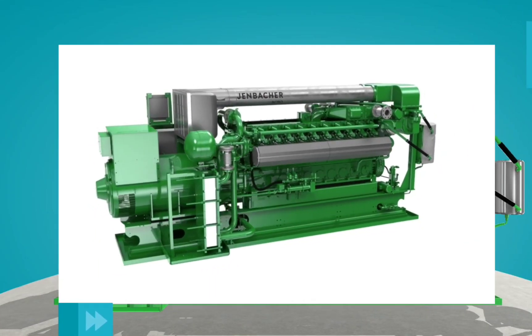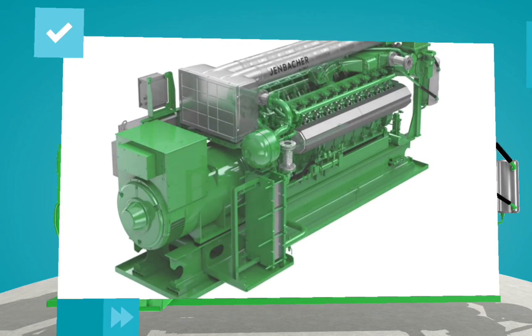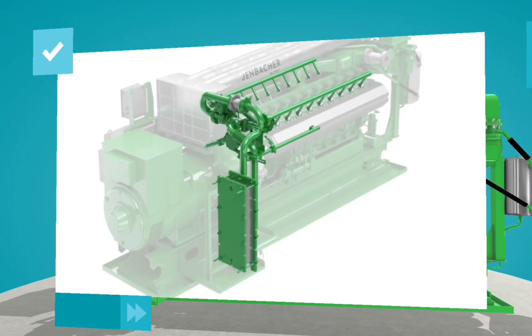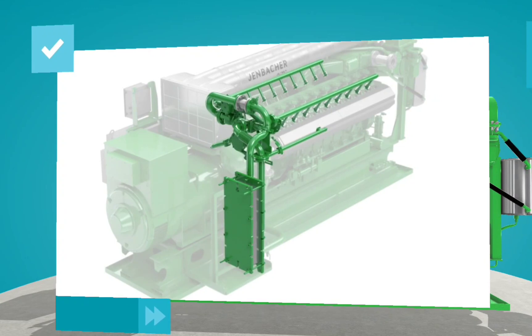When air and gas are combusted, heat is released. The jacket water circuit is one of the ways this heat energy is extracted from the engine, and it also helps keep the engine temperature just right for optimal performance.